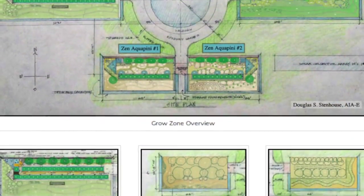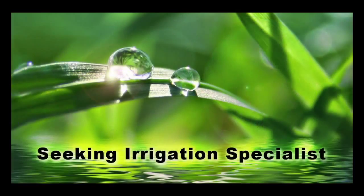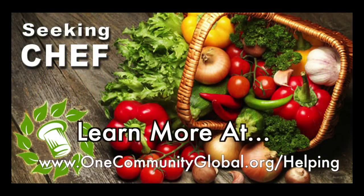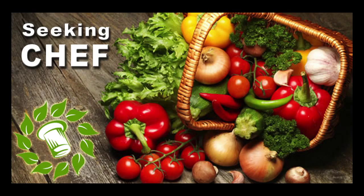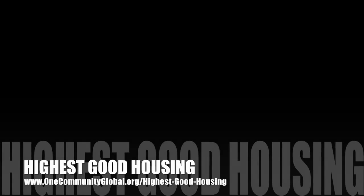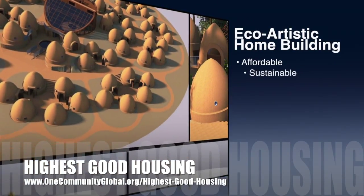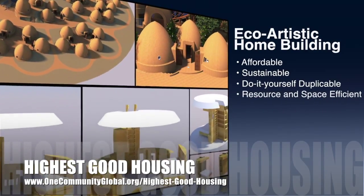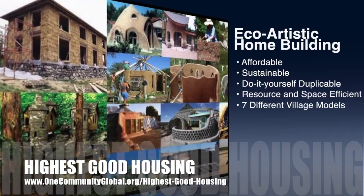In this area of our open source project, we are seeking permaculturalists, an irrigation specialist, a surveyor, and a chef to join our team as either consultants to the project or pioneers who will be moving onto the property. The One Community approach to highest good housing is eco-artistic home building that is affordable, sustainable, do-it-yourself duplicable, resource and space efficient, and consists of seven different sustainably constructed village models.